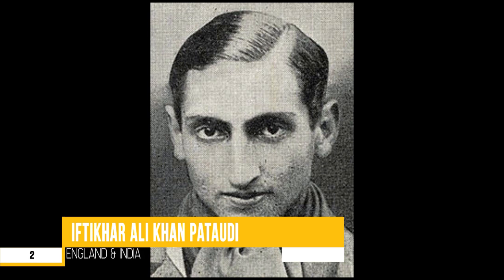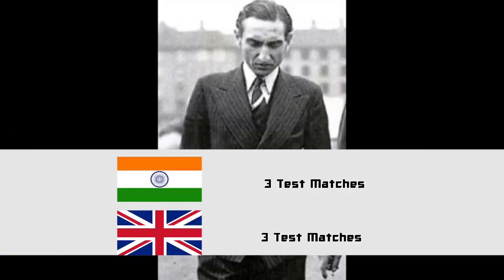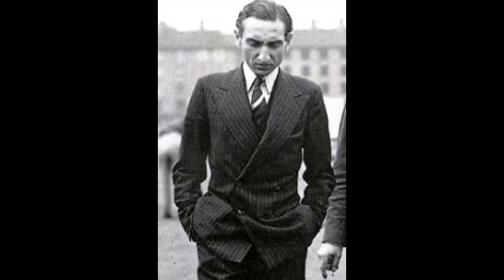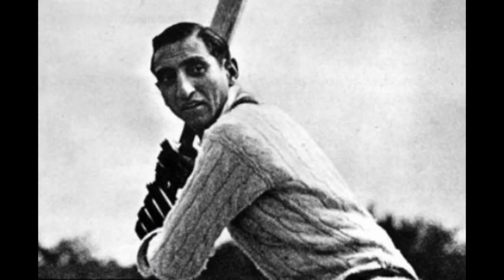Number two: Nawab of Pataudi Senior, the only man to have played for both India and England. He made a century on his test debut against Australia at the SCG in the Bodyline tour of 1932-33, but had to return home before the end of the series after a disagreement over tactics employed by Douglas Jardine. He played one more test for England before being named captain of the Indian team for the tour of England in 1936.